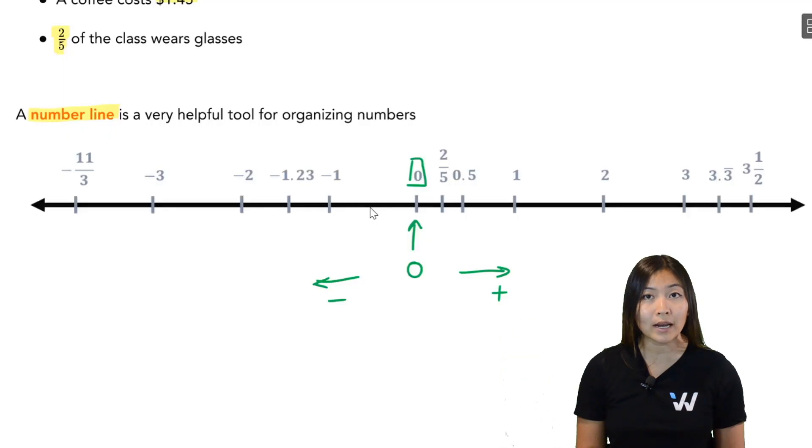And as you go to the right of the number line, your numbers get larger and larger and larger. As you go to the left, your numbers get smaller and smaller and smaller. So on this number line here, you see some examples, we have some positive negative fractions, we have some positive negative decimals, some positive negative integers, even repeated decimals such as that one.